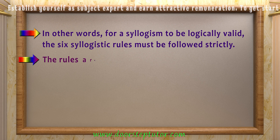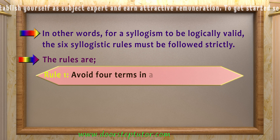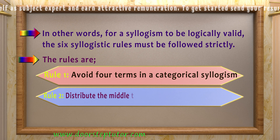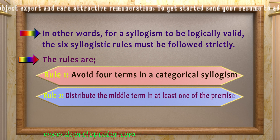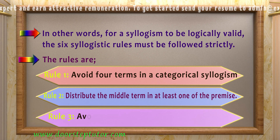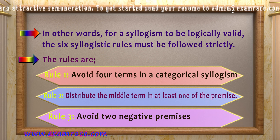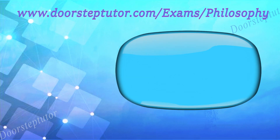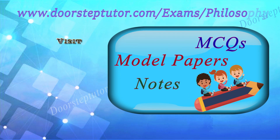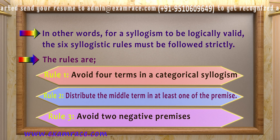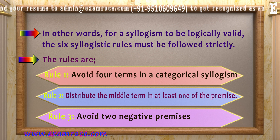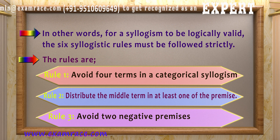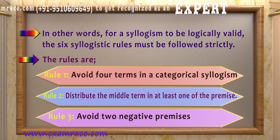The six rules are: 1. Avoid four terms in a categorical syllogism. 2. Distribute the middle term in at least one of the two premises. 3. Any distributed term in the conclusion must be distributed in the premises. 4. Avoid two negative premises, major and minor. 5. If either premise is negative, then the conclusion must be negative. 6. From two universal premises, no particular conclusion can be drawn.